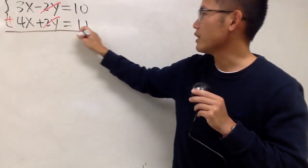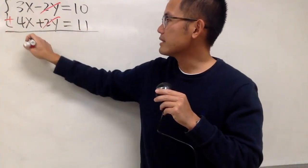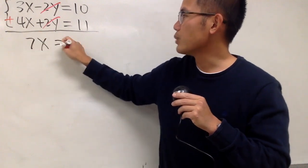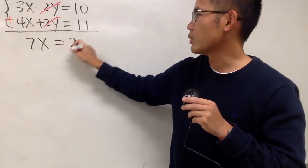And of course, we just have to continue. 3x plus 4x, that will be 7x, and that's equal to 10 plus 11, that's 21.